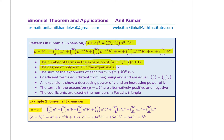The number of terms in expansion of (a+b)^n is n+1. The degree of polynomial in the expansion is n. The sum of exponents of each term in (a+b)^n is n. The coefficients of terms equidistant from beginning and end are equal: nCr = nC(n−r) — that is a symmetry. All expansions show a decreasing power of a and increasing power of b. The terms in (a−b)^n are alternatively positive and negative. The coefficients are exactly the numbers in Pascal's triangle.